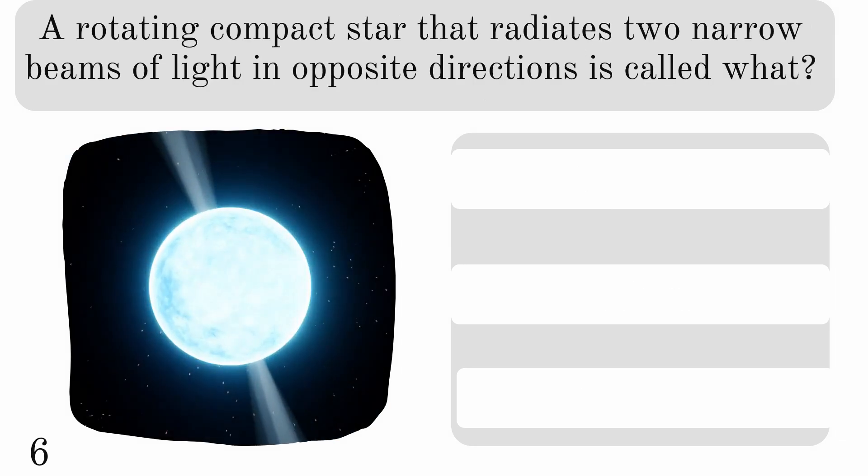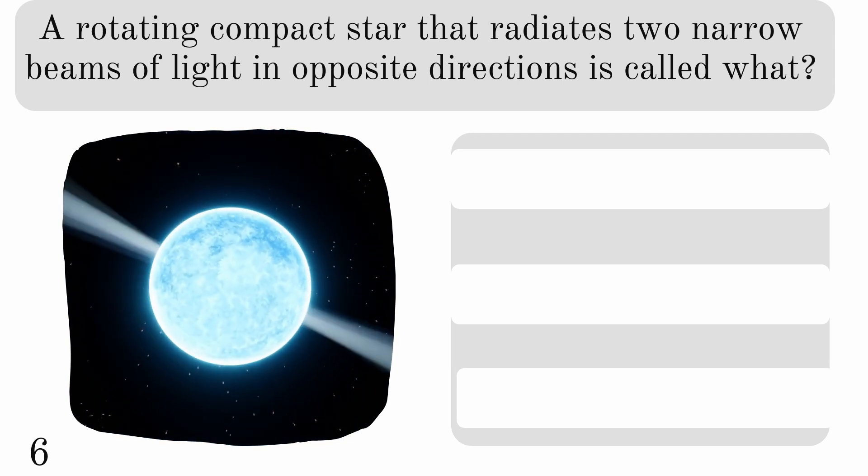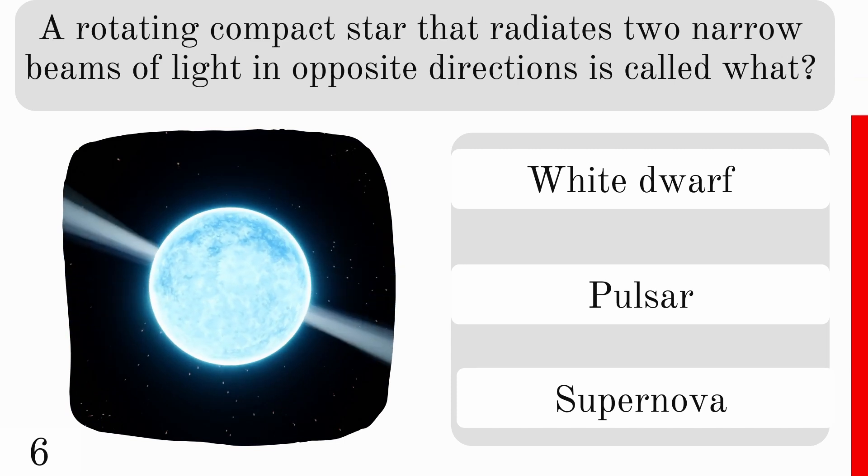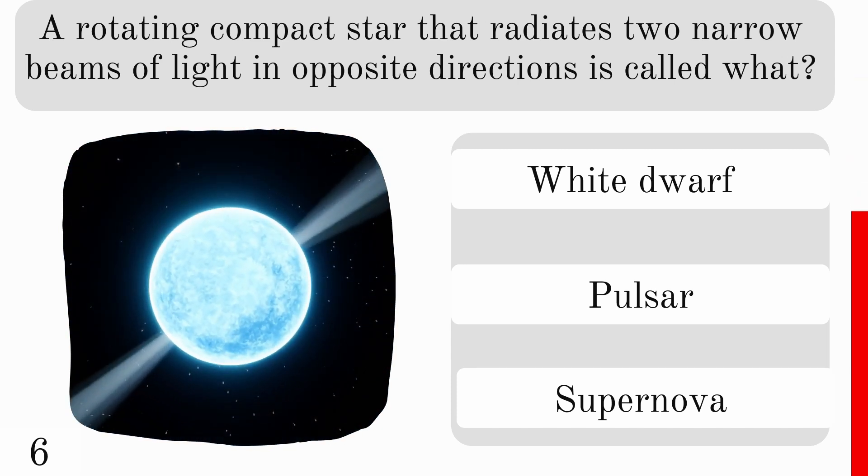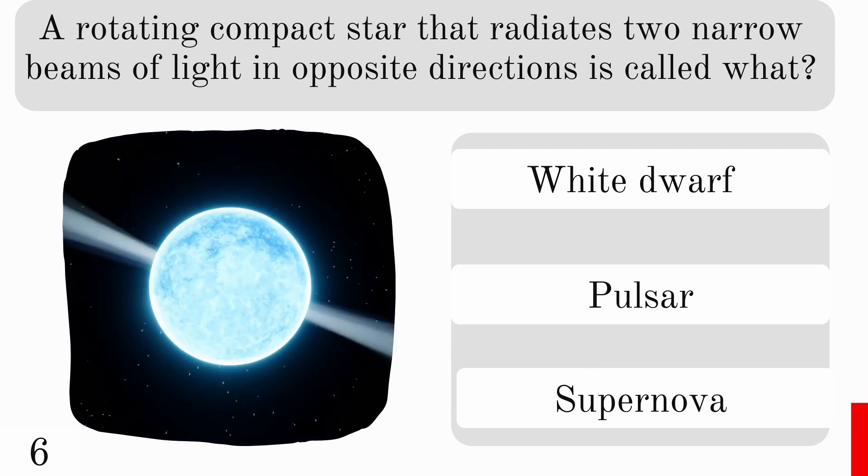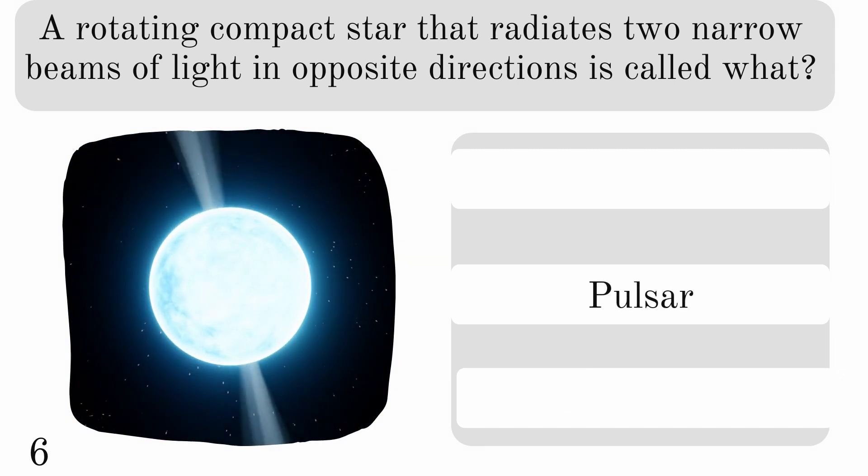A rotating compact star that radiates two narrow beams of light in opposite directions is called what? A white dwarf, pulsar, or supernova? And the answer is pulsar.